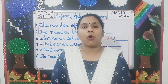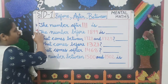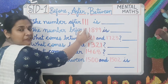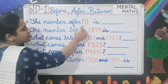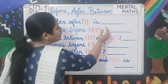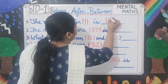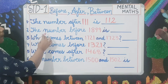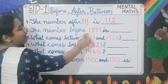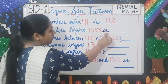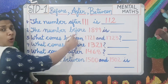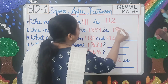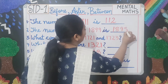Let us see some questions. Number one: the number after 111 is — after this, you have to move forward, so it will be 112. Next question: the number before 1899 is — before means backward counting, so you do backward counting and it will be 1898.